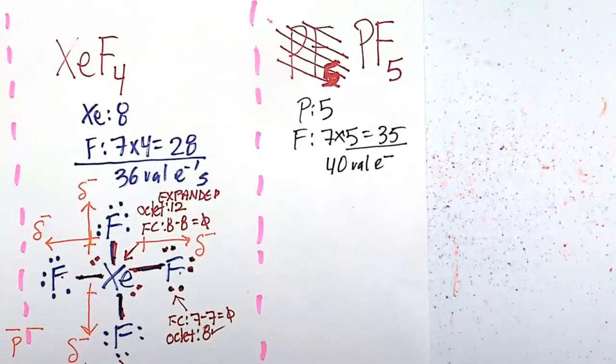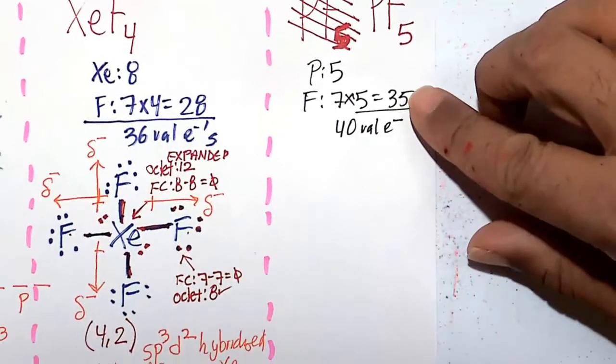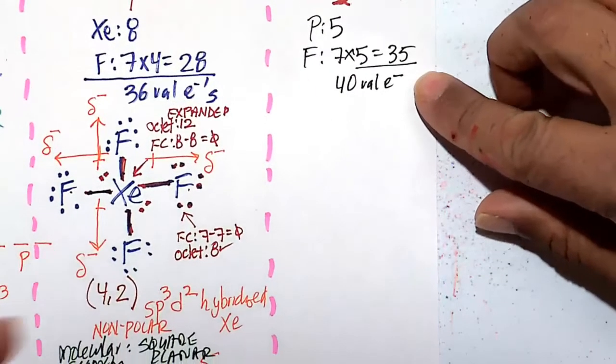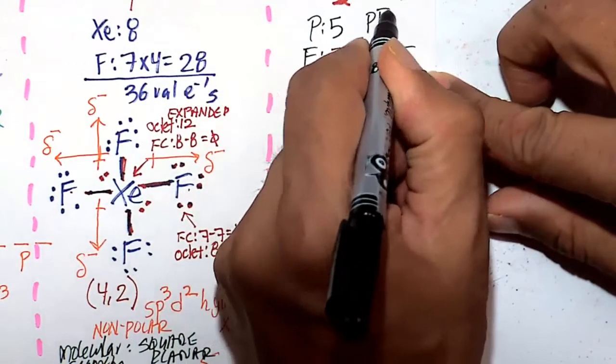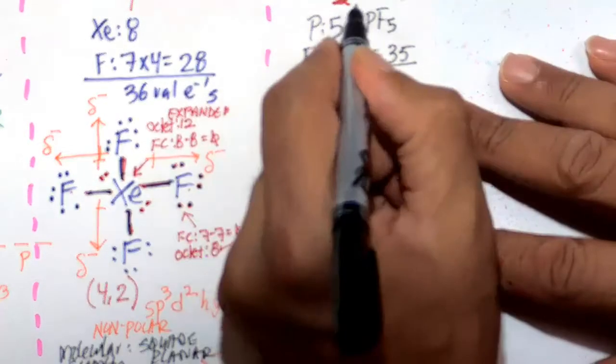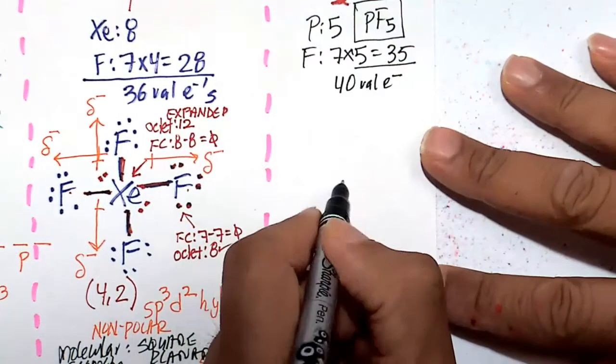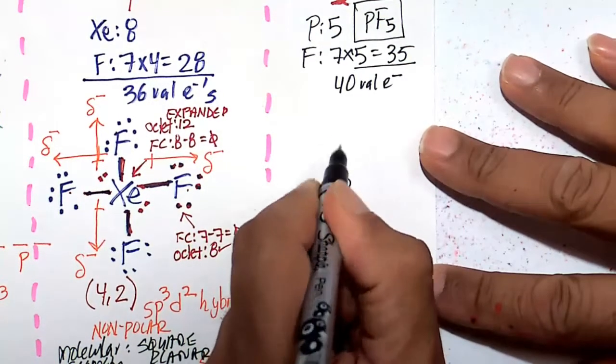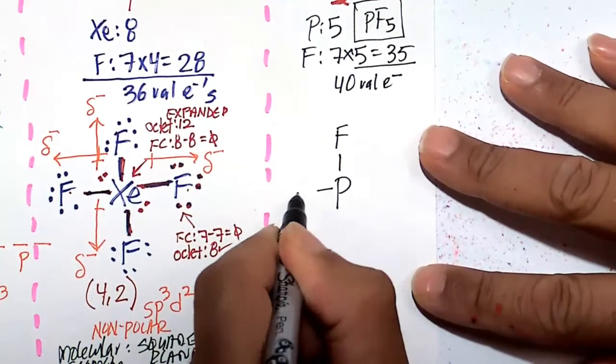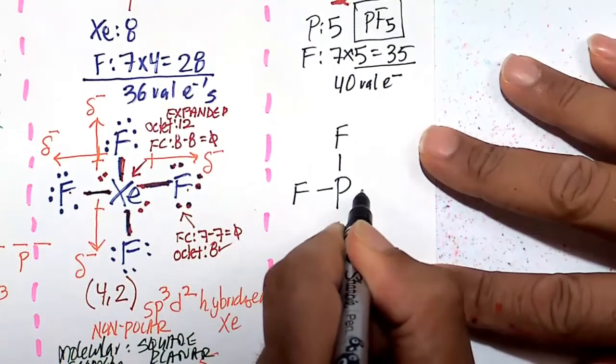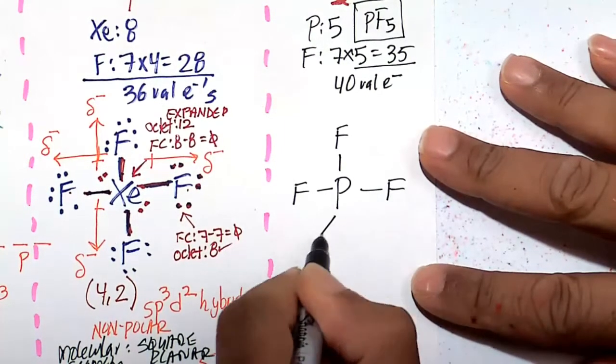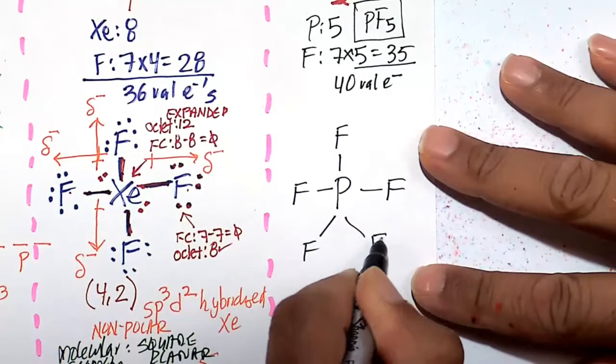So let's make phosphorus our central atom because we don't know which of the 5 fluorines we're going to be central. So it will be nice and simple to make the phosphorus the central atom. So phosphorus is our central atom, and we'll just put in our 5 fluorines here. 1, 2, 3, this is pretty easy, 4, 5.